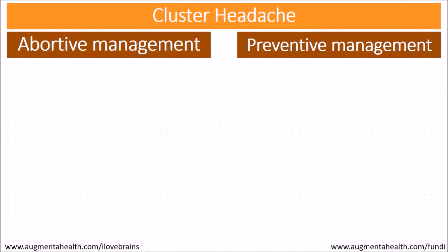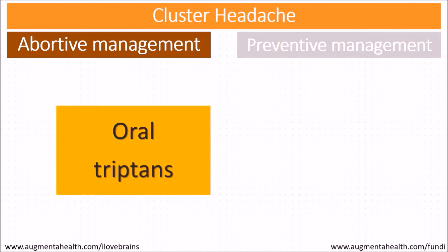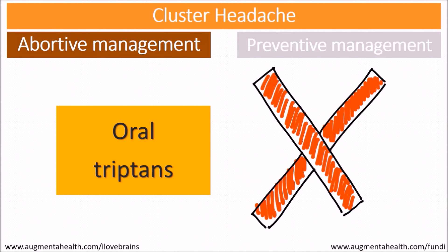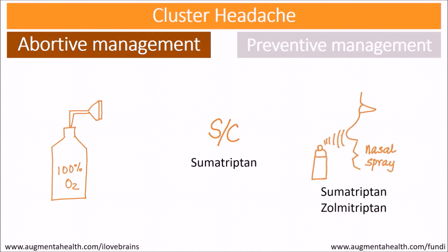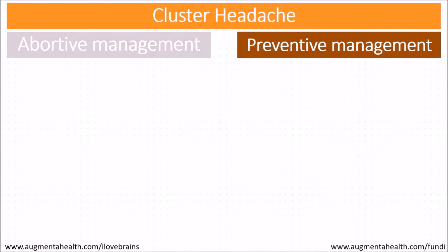Talking about management, there are abortive and preventive strategies. Oral triptans, which are important choices in migraine, are not useful in cluster headache. More useful abortive strategies include 100% oxygen at 12 to 15 liters per minute, subcutaneous sumatriptan, and nasal sprays of sumatriptan and zolmitriptan.